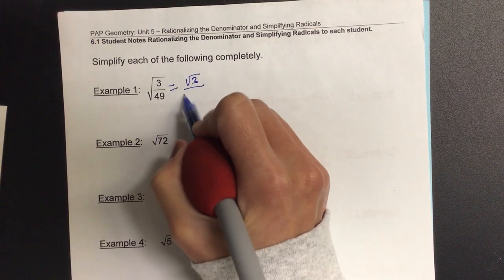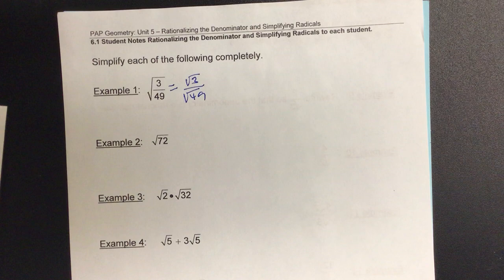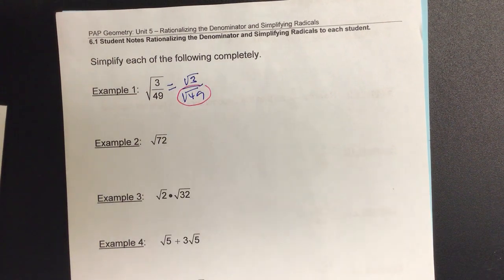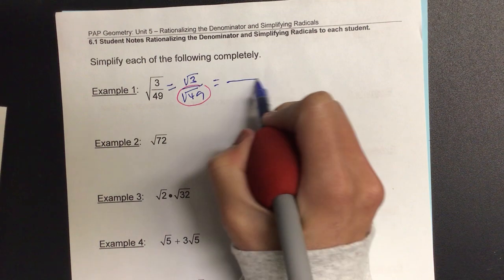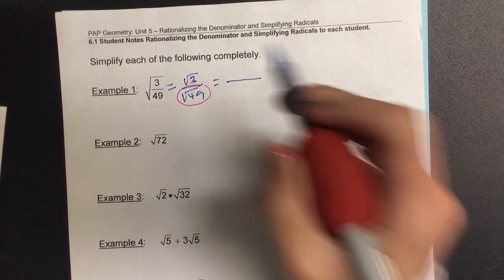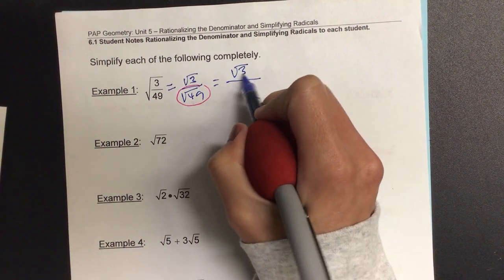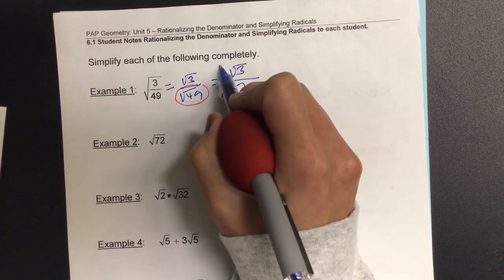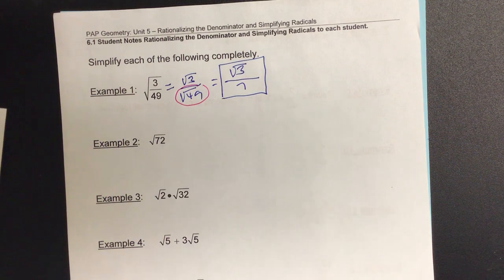So we have radical 3 over radical 49, and then what do we notice about the bottom value? It is a perfect square. So radical 3 cannot be further dissected, but radical 49 is 7, and we're done. As long as you don't have a radical on the denominator, you're good to go.